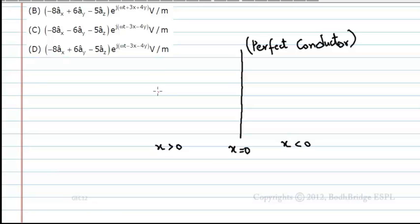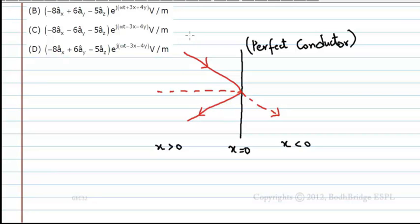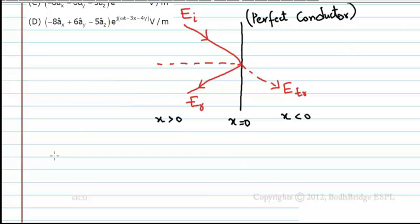This is a perfectly conducting slab. Draw a normal to the slab. A wave is incident in one direction; some part is transmitted into the slab and some is reflected back. We call these E_incident, E_reflected, and E_transmitted. From electromagnetics, the standard result is: E_incident + E_reflected = E_transmitted.